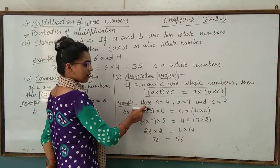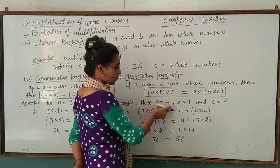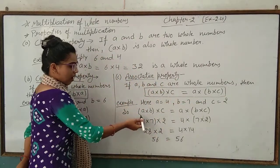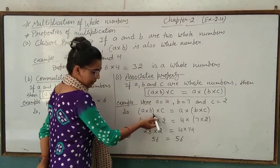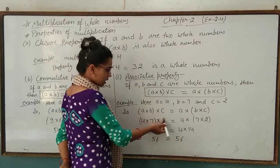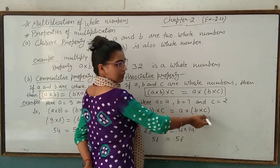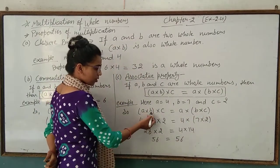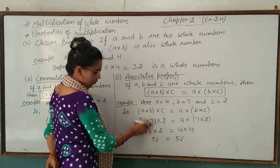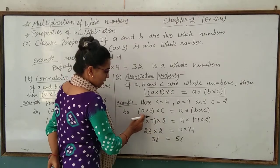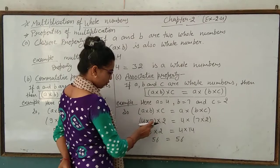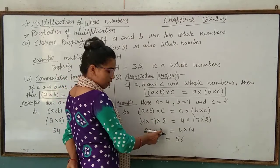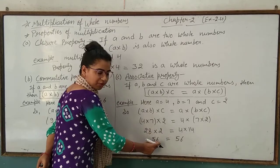Now we take an example. Here a is equal to 4, b is equal to 7, and c is equal to 2. Applying the property, we take the left side first: 4 multiplied by 7, multiplied by 2. Four multiplied by 7 is equal to 28, and 28 multiplied by 2 is equal to 56.